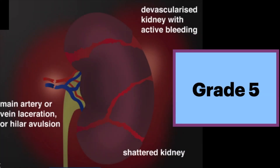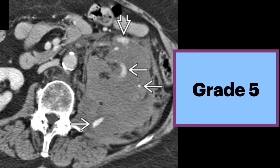Last is a grade 5 injury. The kidney is shattered and devascularized with active bleeding. The main artery or vein are lacerated with hilar avulsion. This CT shows multiple sites of active arterial extravasation and a fragment of the fractured kidney. Emergency nephrectomy was performed due to the extensive parenchymal damage and active bleeding.